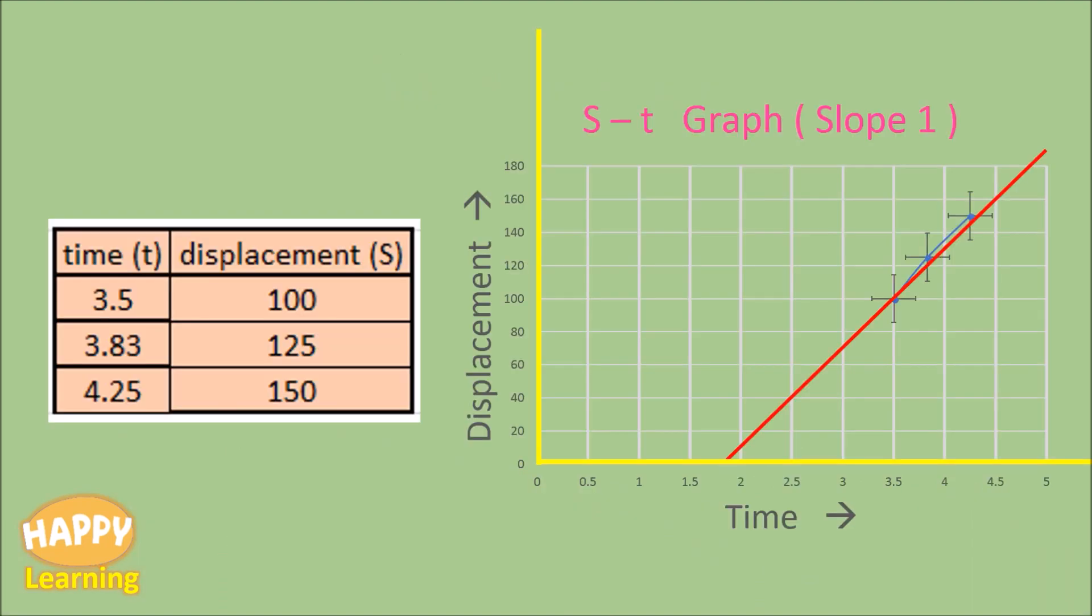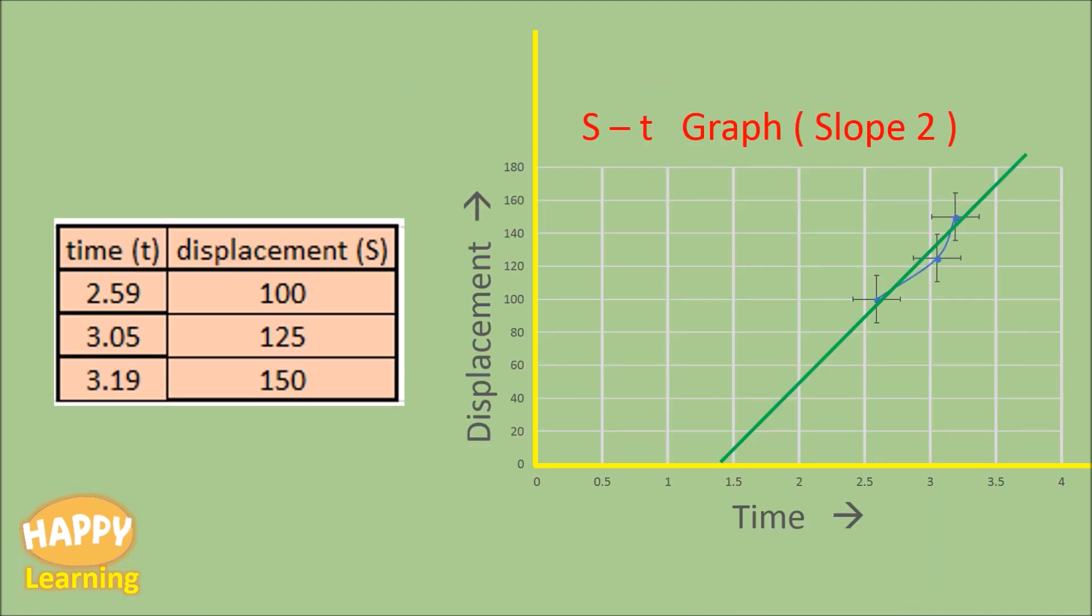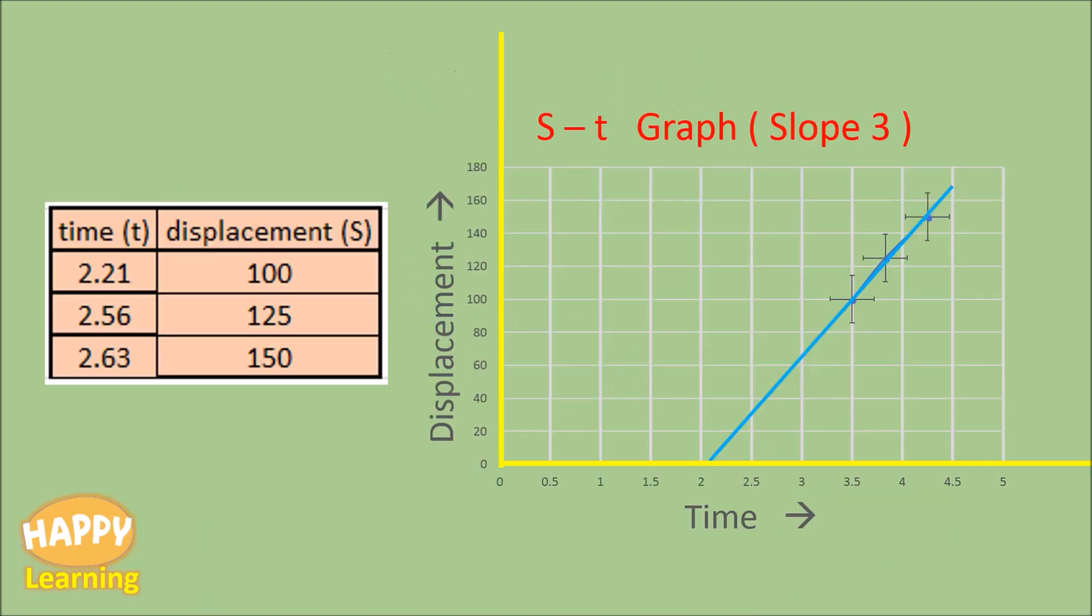Now graphs are drawn between s and t. So in the first case for slope 1 the time versus distance is plotted. In the third case for slope 3 also time versus distance is plotted. So observe these are all straight lines.